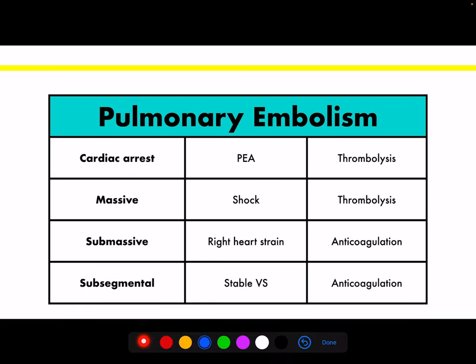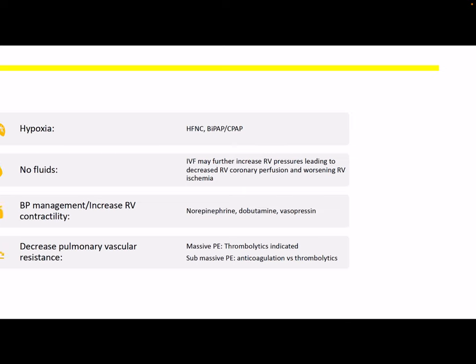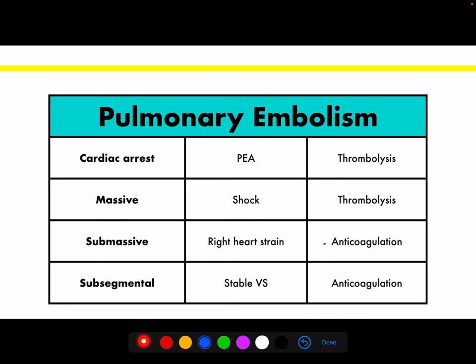This is how we classify pulmonary embolisms. PEA arrest — PE is one of the causes, and treatment of choice is thrombolytics. If the PE is massive, meaning it has affected vital signs and the patient is in a shock state, thrombolytics are required. If it's a submassive PE — normal vital signs with evidence of right heart strain, either abnormal troponin, elevated BNP, or abnormalities on echocardiogram or EKG — then we do anticoagulation. There are studies supporting thrombolytics for submassive PE as well, though this remains somewhat controversial.